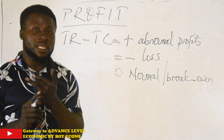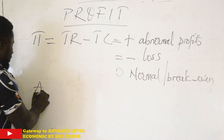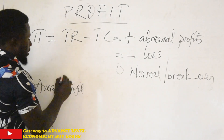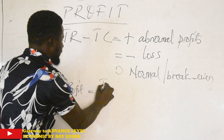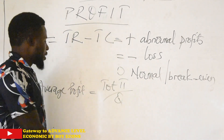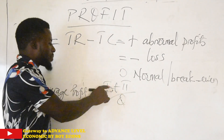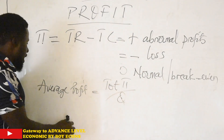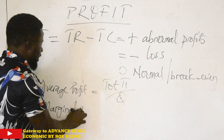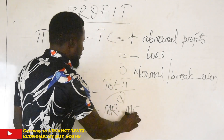Profit can be calculated in totals. We also have average profits — you simply take your total profits and divide by the quantity relating to that profit-maximizing output level. So total profit divided by output gives you average profit. Then we have marginal profit, which is simply the difference between marginal revenue and marginal cost.